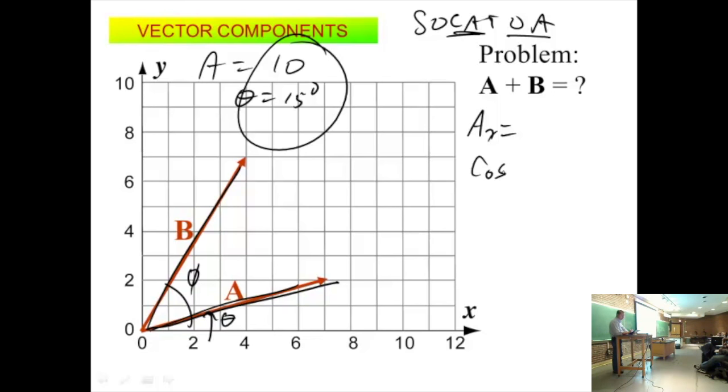So it would be, so cosine of theta equals adjacent over my hypotenuse. And what am I looking for? The adjacent side, which is, this is my A X. A X is going to be H hypotenuse times the cosine of whatever my angle is. Which would be 10 times the cosine of 15 degrees. That would give me the X component of A.